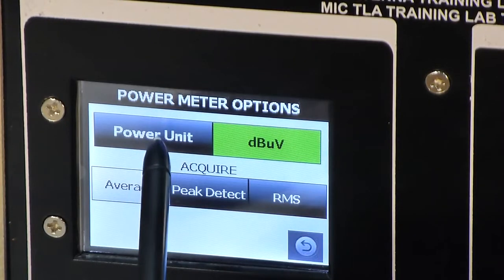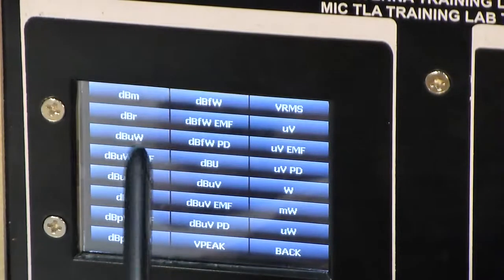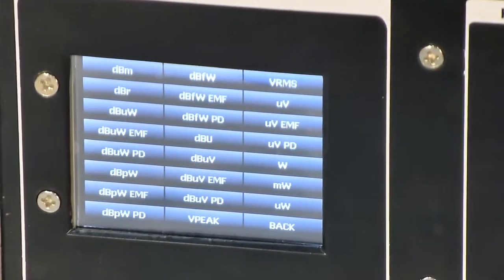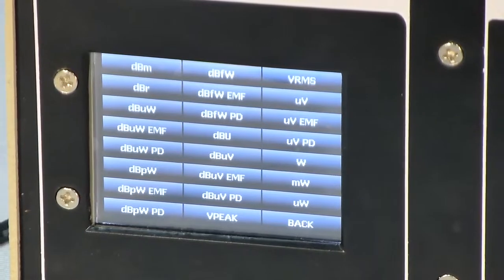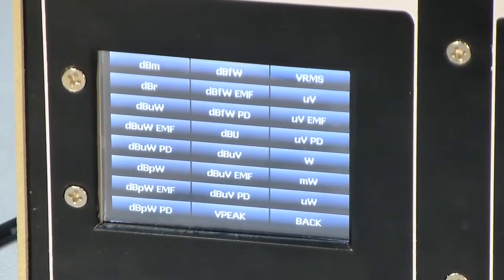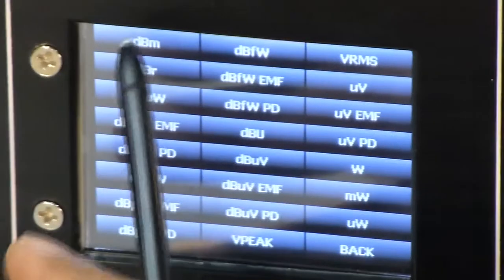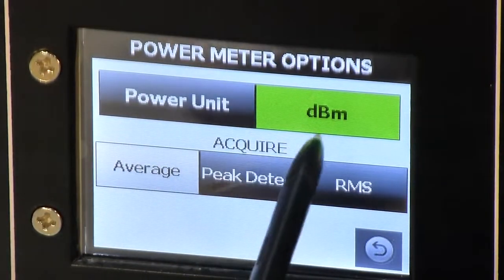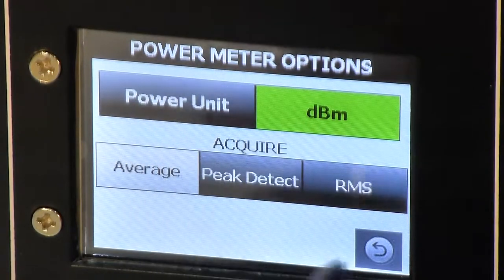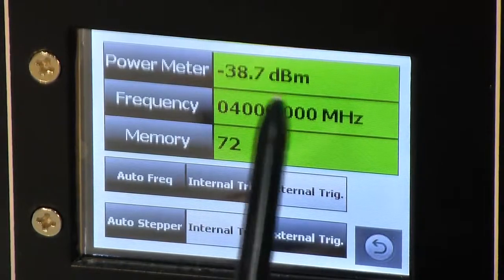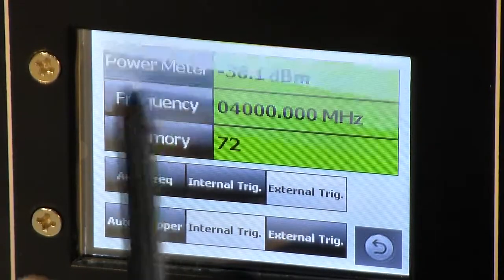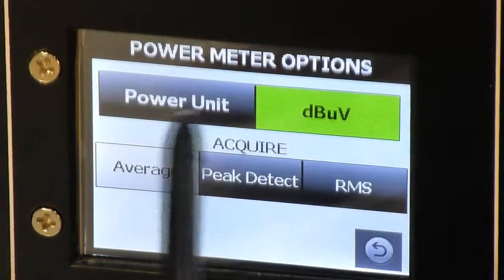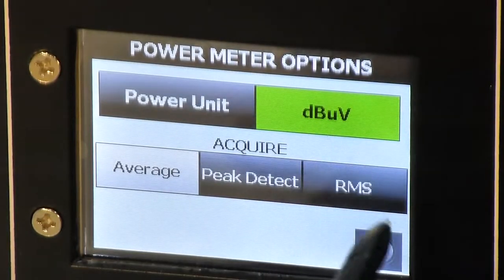We can use average or peak detect or RMS acquire techniques for reading the input signal. To change power unit, press on this button. Here you see a number of options for power unit. You can select whatever unit you need. Like I have selected dBm. Now power is shown in dBm. You can always change the values. Now the power unit is in dBmicrovolts.